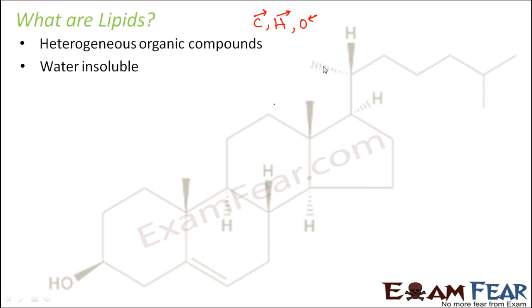So lipids are a better source of energy than carbohydrates. In human beings, we have instant sources of energy — that is the monosaccharides, like glucose. When you talk about a storehouse of energy, it was polysaccharides like glycogen. But glycogen is the secondary storage of energy. The primary energy storage is fats, and fats are nothing but lipids — that is what we are going to talk about now.